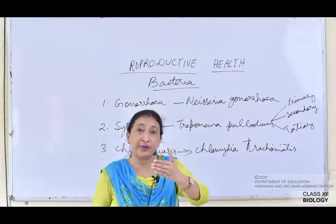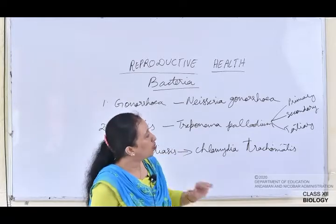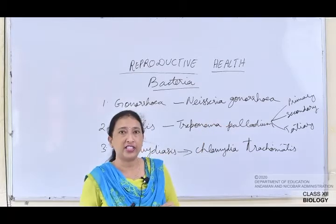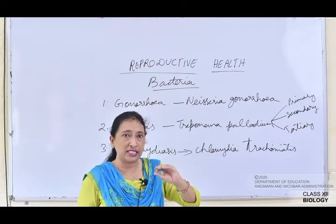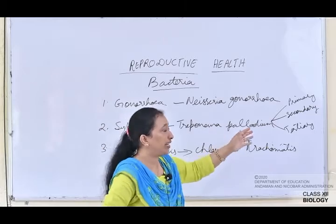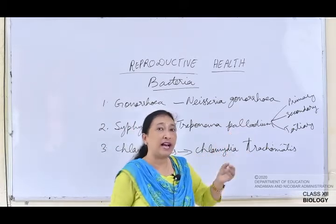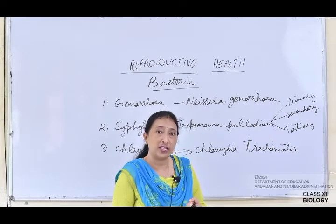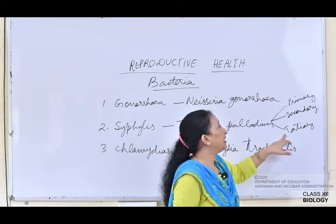In the secondary stage, if the infection goes undetected, pus will start to form in those ulcers, discharge will take place, and the person will have hair loss. Fever will occur and the mucosal lining will be affected.